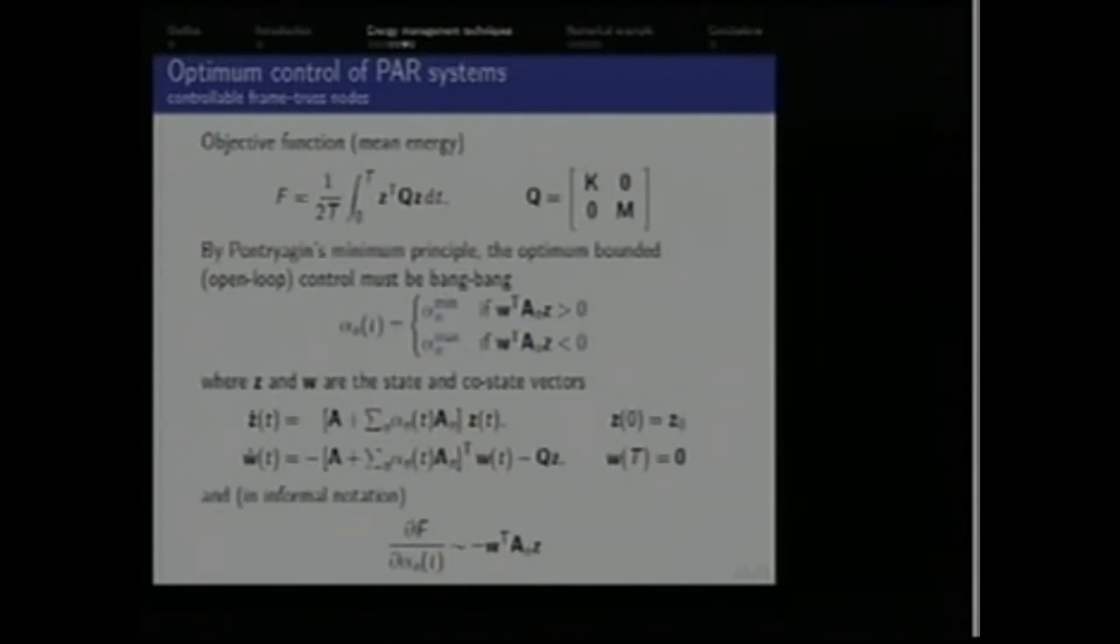Our goal is mitigation of vibrations, so we need for that purpose a certain objective function, and we have decided to use just the mean total energy of the structure within a certain time interval. And by the Pontryagin minimum principle, we learn that the optimum bounded open-loop control is of the bang-bang type. So optimum control must attain only the lower or the upper bound of this allowable range, according to a certain function here, which quite informally can be called a gradient of the objective function with respect to the control functions. So this notion needs to be formalized, but basically it's kind of a quasi-gradient. In this function we have state variables z, but also the co-state variables w, which have to satisfy an adjoint system or the co-state system of equations.